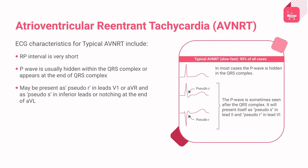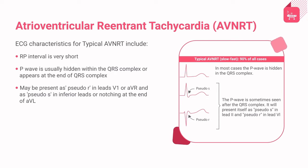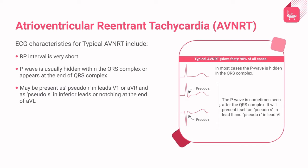In typical AVNRT, a premature atrial depolarization (PAD) conducts to the AV junction through the atrium. The PAD arrives at the AV node when the fast pathway is in a refractory state; therefore the impulse conducts anterograde via the slow pathway. When the impulse reaches the end of the slow pathway, the fast pathway is ready for retrograde conduction. Therefore typical AVNRT is also called slow-fast AVNRT. ECG characteristics include a very short RP interval, with the P wave usually hidden within the QRS complex or at the end — appearing as pseudo-R in V1 or AVR and pseudo-S in inferior leads or notching at the end of AVL.